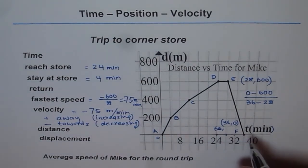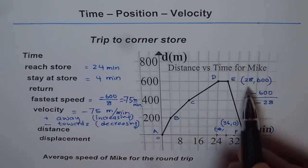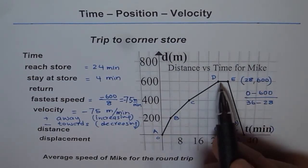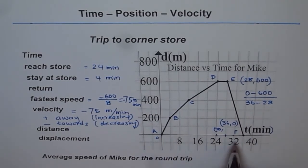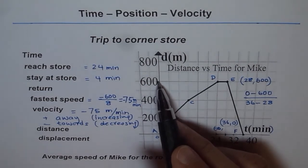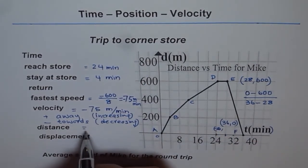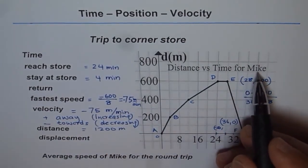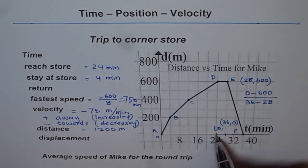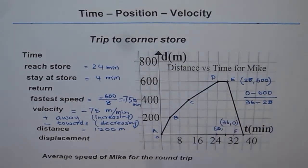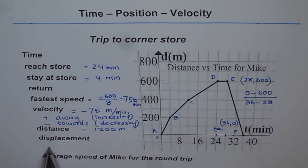Now we will consider one more very important aspect. All along, how much distance did Mike cover going to the corner store and coming back? What is the distance traveled by Mike in 36 minutes? Total distance covered is going 600 away and coming back 600. So the total distance is 1200 meters. Let me introduce you a new term, displacement.